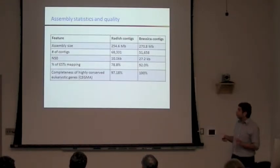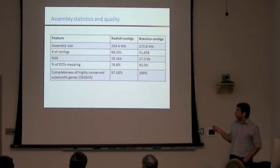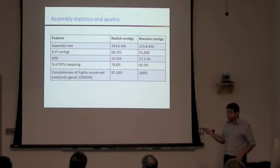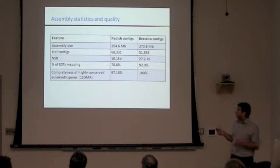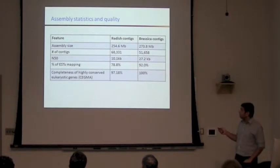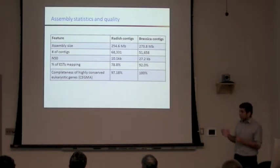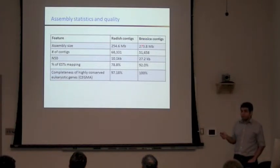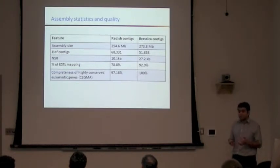The actual genome size estimated by flow cytometry is about 600 MB, but we were only able to sequence about 254 MB of the genome. That itself is quite fragmented — the N50 of the genome is just 10.1 KB, which is very small. By comparison, the Brassica genome released a couple of years back had a significantly higher N50 of 27.2 KB. They had 72x coverage and sequenced extensively, yet could still only get 274 MB, probably because about 30 to 40% of the Brassica and Radish genomes are heterochromatic and repetitive.